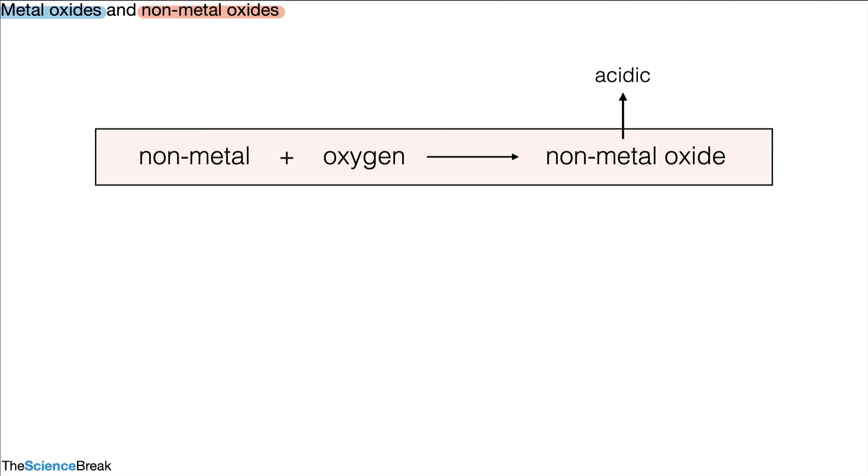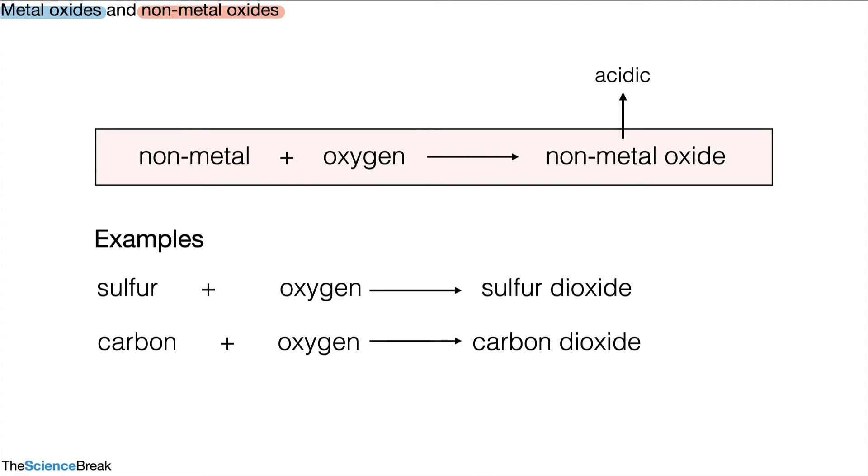We can look at one or two other examples. Other examples include sulfur dioxide, carbon dioxide which we just did, and nitrogen oxide, each formed by word equations as shown there. These all form acids when they react with water. So that's what they have to do with acids. That's what non-metal oxides have to do with acids.